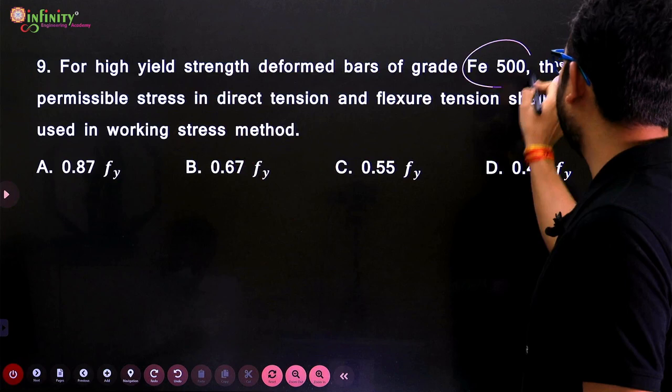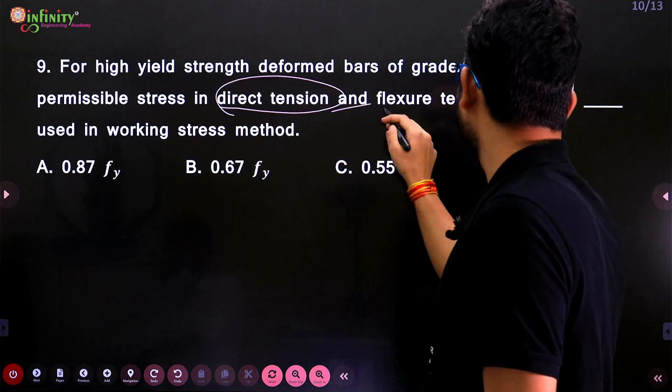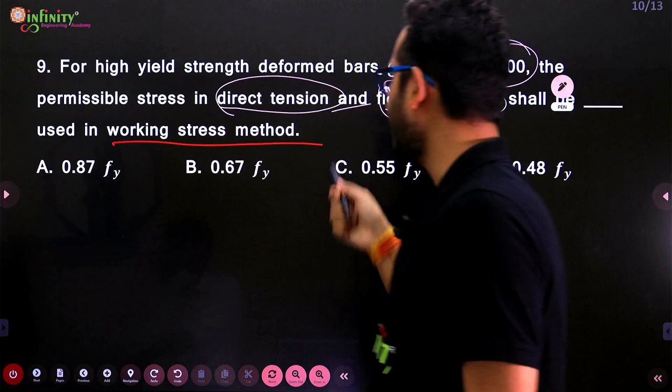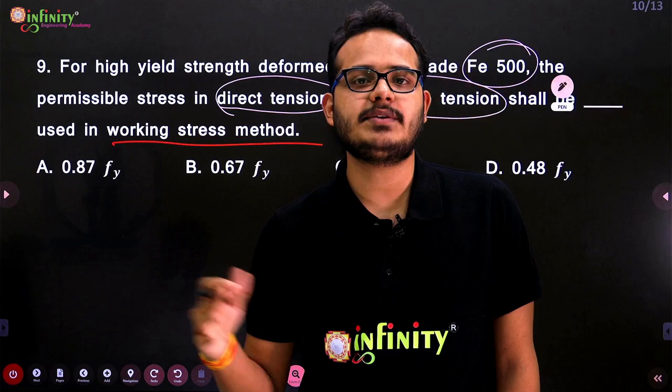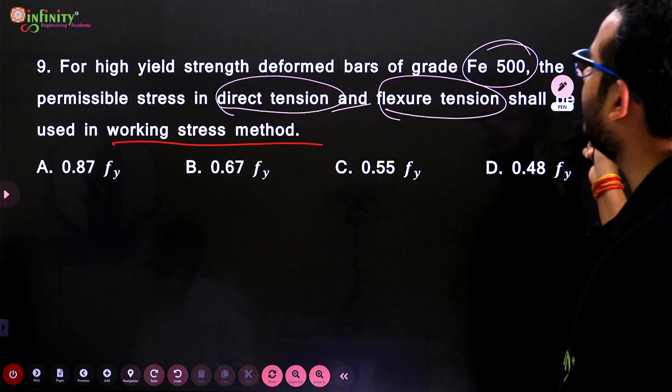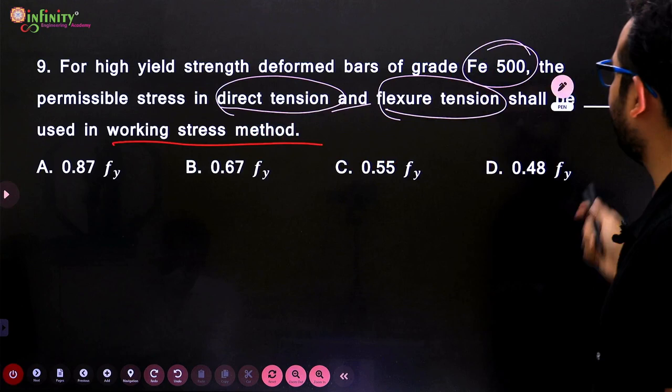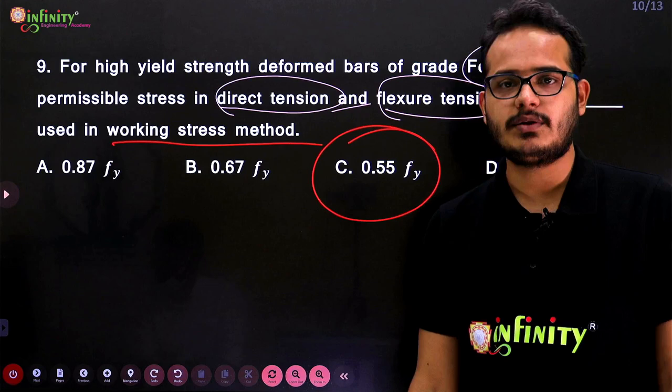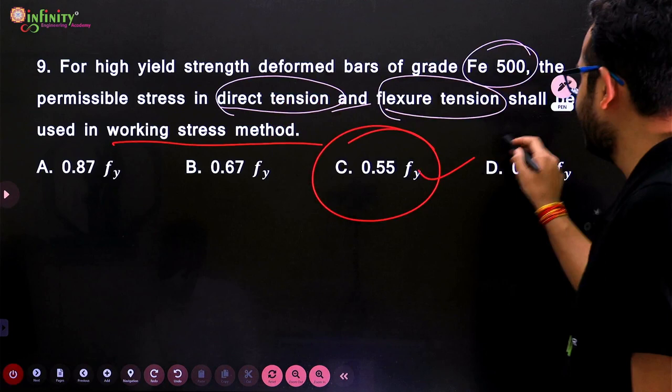Next question: For high yield strength deformed bars of grade Fe 500, the permissible stress in direct tension and flexural tension shall be — as per IRC provisions. This is a provision-based question to be remembered. The answer is (c).